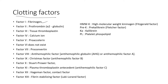Factor 1 is fibrinogen. Factor 2 is prothrombin. Factor 3 is tissue thromboplastin. Factor 4 is calcium ion. Factor 5 is proaccelerin. Factor 6 does not exist. Factor 7 is proconvertin. Factor 8 is anti-hemophilic factor. Factor 9 is Christmas factor. Factor 10 is Stuart-Prower factor. Factor 11 is plasma thromboplastin antecedent. Factor 12 is Hageman factor. Factor 13 is fibrin-stabilizing factor. These 13 factors play a major role.